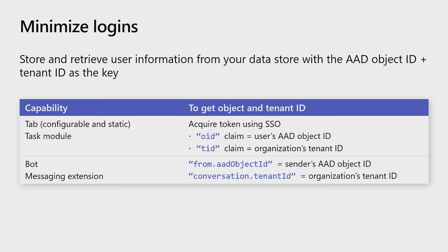The common key that's available across all these capabilities is the user's tenant ID and Azure AD object ID. This is the key that you should use when storing information about the user. In your tab or task module, you'd use SSO to get an access token for the user, which on your server you'll validate and examine the TID and OID claims to get the tenant ID and object ID respectively. This process is even easier for bots and messaging extensions because every activity sent to your bot includes this information automatically, so you can get it directly from the payload.